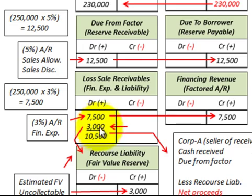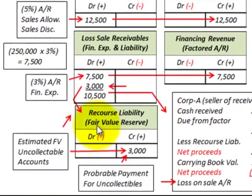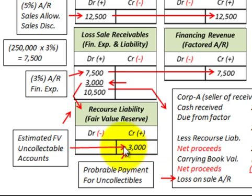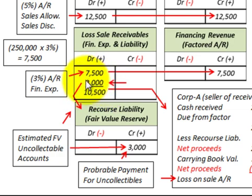There is one more component of the loss: the $3,000 estimated uncollectible accounts. We set up a 'recourse liability' account — a liability representing the fair value reserve for estimated uncollectible accounts and the probable payment Corporation A would have to make to Bank B. We credit recourse liability for $3,000 and debit the loss on sales of receivables for $3,000. The total loss on sales of receivables is $7,500 financing expense plus $3,000 uncollectibles, equaling $10,500.